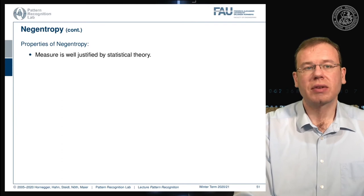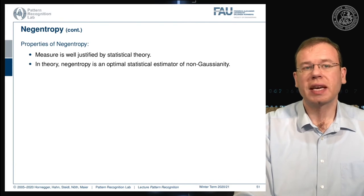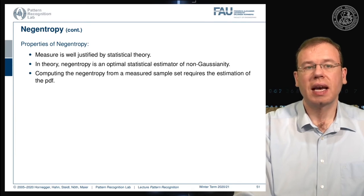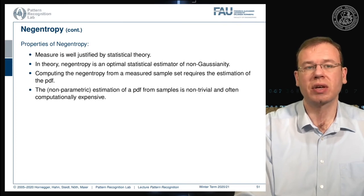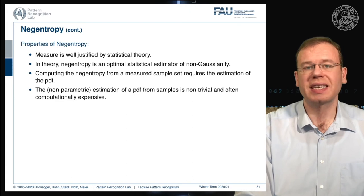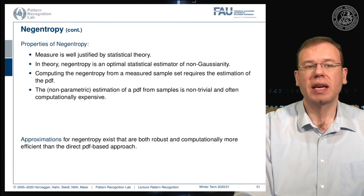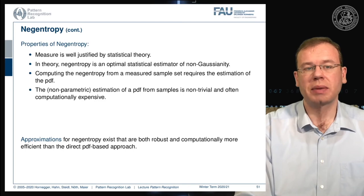Negentropy is well-justified by statistical theory and is theoretically an optimal estimator of non-Gaussianity. However, computing negentropy from measured samples requires estimating the probability density function, and non-parametric PDF estimation is non-trivial and often computationally expensive. Therefore, approximations for negentropy are used that are more robust and computationally efficient.